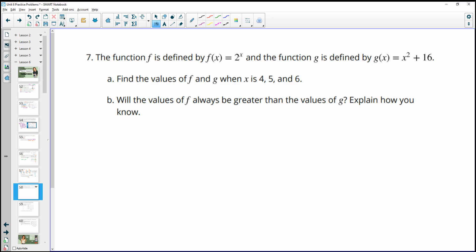Number 7, the function f is defined by f(x) equals 2 to the x. And the function g is defined by g(x) equals x squared plus 16. Find the values of f and g when x is 4, 5, and 6. So if we plug in for f, 2 to the 4th is 16. 2 to the 5th is 32. We put those kind of close. Okay. So 16 for the first one, 32 when we plug in 5. And then 2 to the 6th is 64. So then when we plug in for g, we have 4 squared, which is 16. So if we do 4 squared, it's 16. Plus 16 is 32. 5 squared is 25. Plus 16 is 41. And then 6 squared is 36 plus 16 is 52.